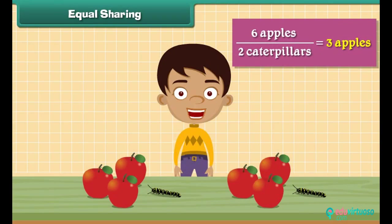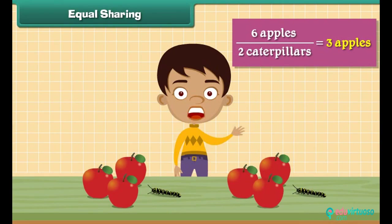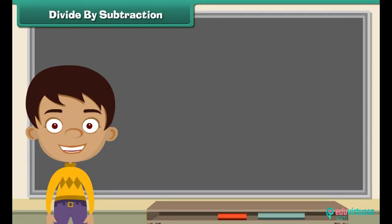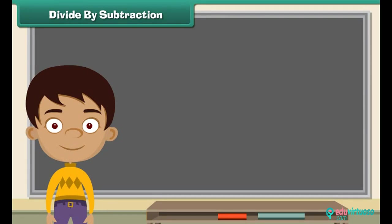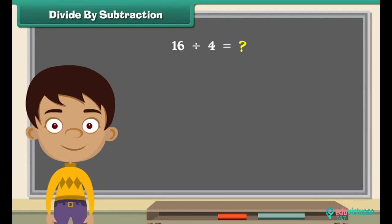Six apples divided by two is equal to three apples each. We will now learn division by subtraction. Let us divide sixteen by four.